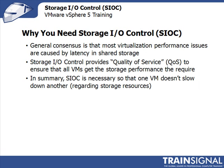Quality of service is needed to ensure that the virtual machines with the highest priority get the resources they need. SIOC is necessary so that one virtual machine doesn't slow down another regarding storage resources. More realistically, it's usually a handful of lower-priority virtual machines slowing down higher-priority ones — for example, virtual desktops, print servers, file servers, or web servers that aren't as high a priority as other VMs accessing the same storage.